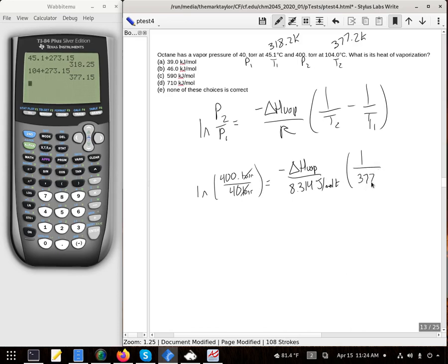So T2 is 377.2 and T1 is 318.2. Alright, we're going to solve for delta H.